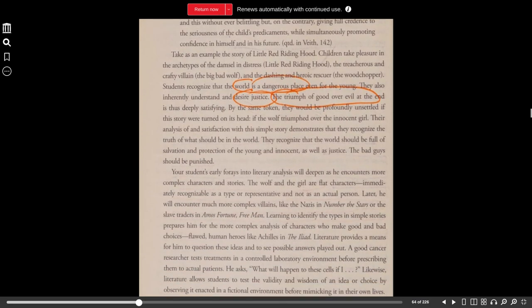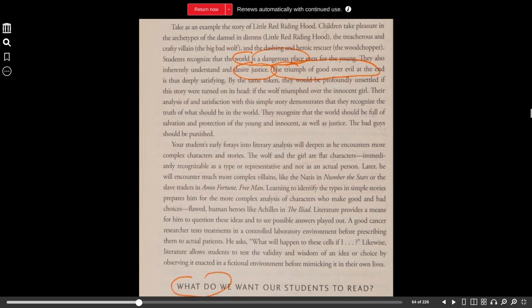Take as an example the story of Little Red Riding Hood. Children take pleasure in the archetype of the damsel in distress, Little Red Riding Hood, the treacherous and crafty villain, the big bad wolf, and the dashing and heroic rescuer, the woodchopper. Students recognize that the world is a dangerous place, even for the young. They also inherently understand and desire justice. The triumph of good over evil at the end is thus deeply satisfying.